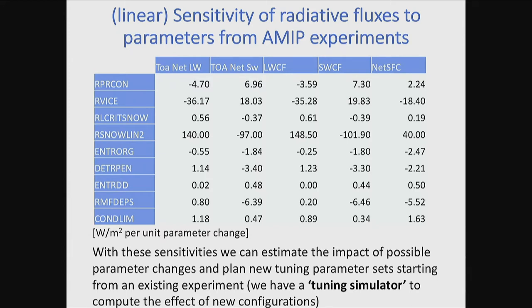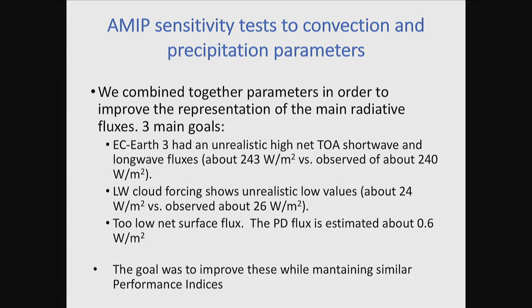We need to know the sensitivity of the model to these parameters. We did a series of relatively short experiments - six-year experiments - varying these parameters, starting from the reference value and then increasing and decreasing them. You change each parameter and see what happens if you increase or decrease them within the range of what is reasonable. You can make similar plots for all possible radiative fluxes you're interested in - net TOA flux, cloud forcing, long wave cloud forcing, short wave at surface, et cetera. The lines are reasonably linear, so by fitting a line we can derive these sensitivities. For each parameter you get the sensitivity of a specific flux - how much it changes if you change the parameter by one unit. We made basically a software tuning simulator - actually a big Excel spreadsheet. With that tool you can plan your experiments: you say I don't like these fluxes, you implement a score with weights, and you find a minimum to get the model configuration closest to what you would like. This converges quite efficiently - in a couple of iterations you get where you want to go.